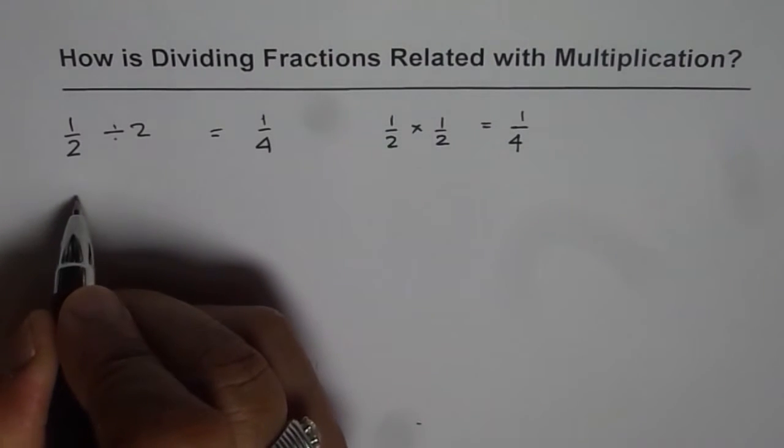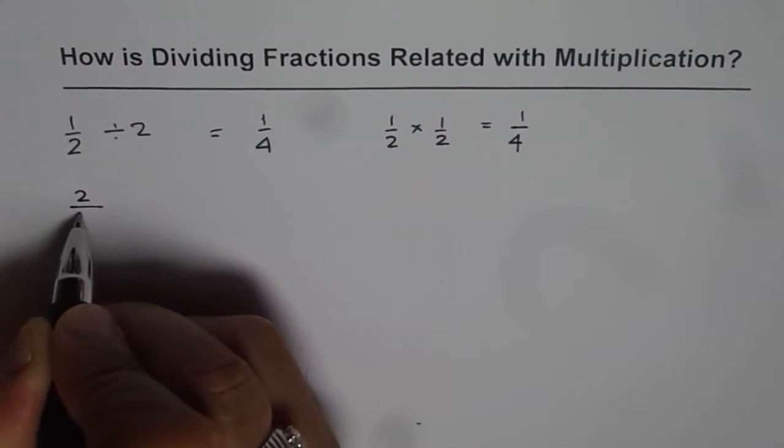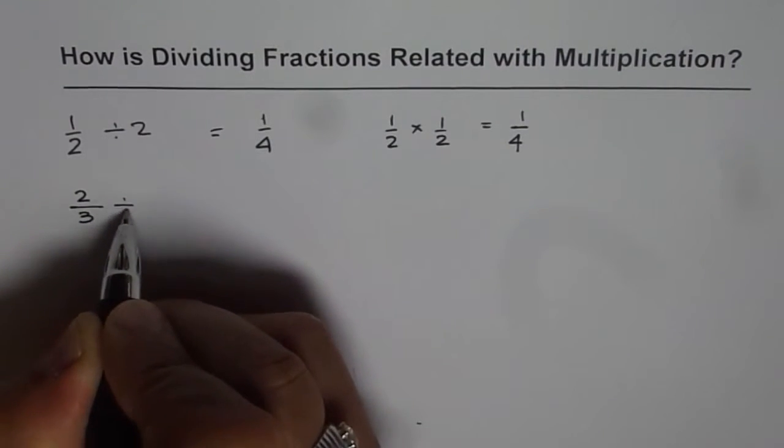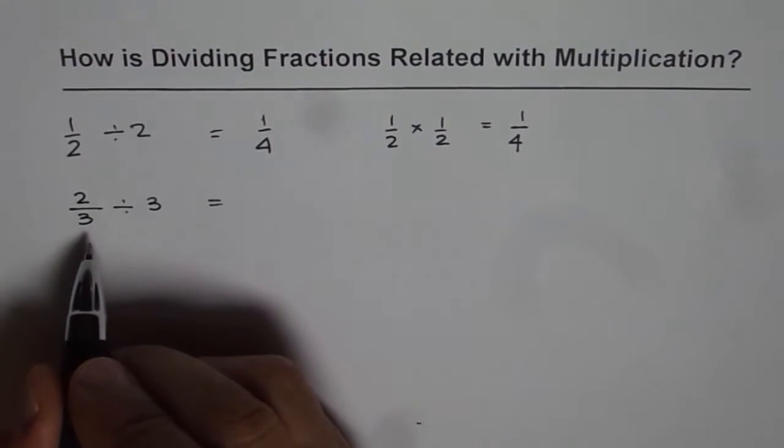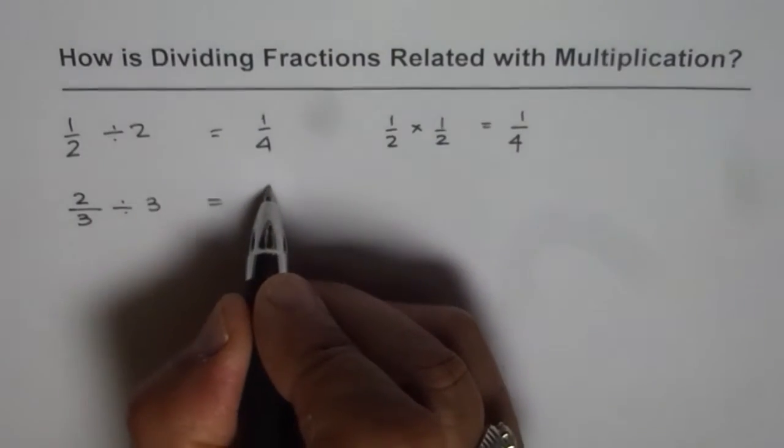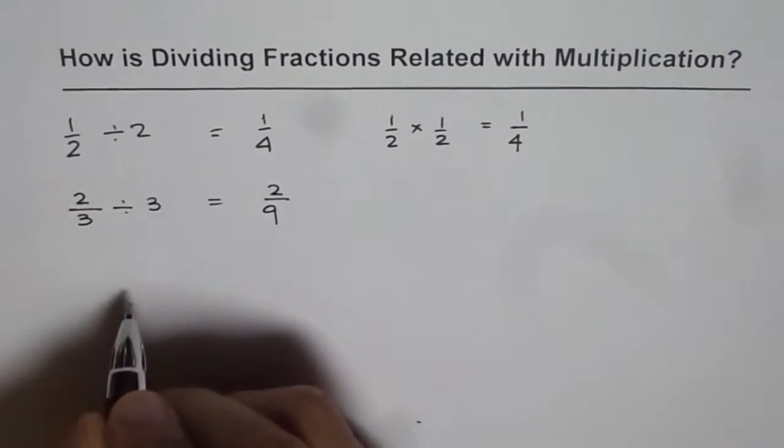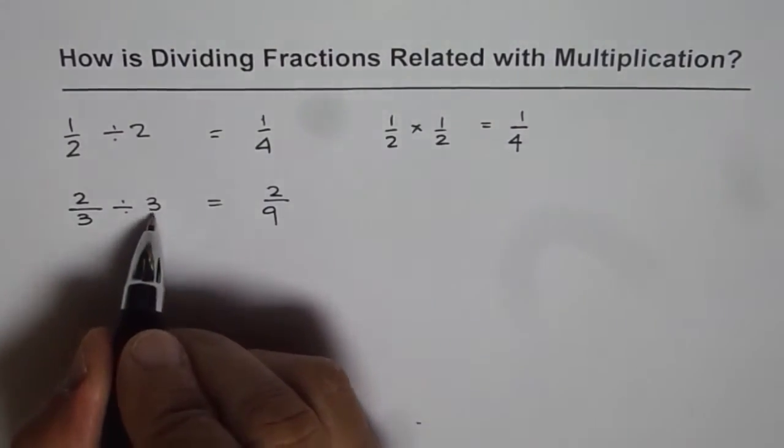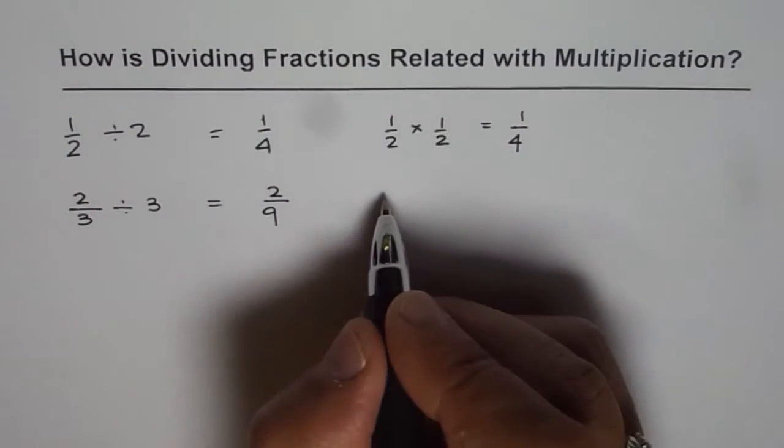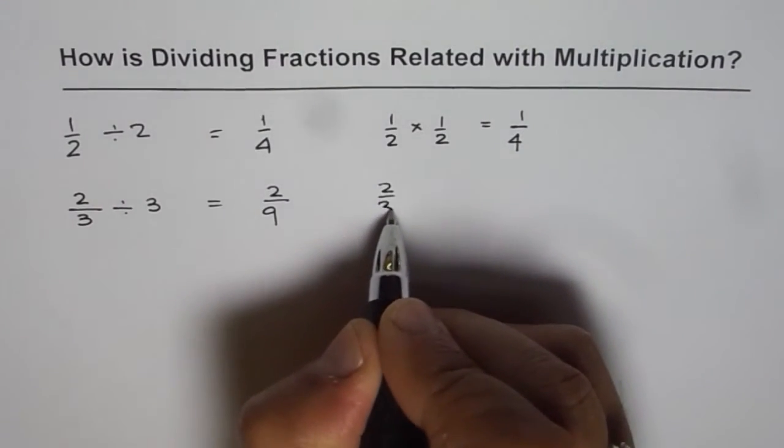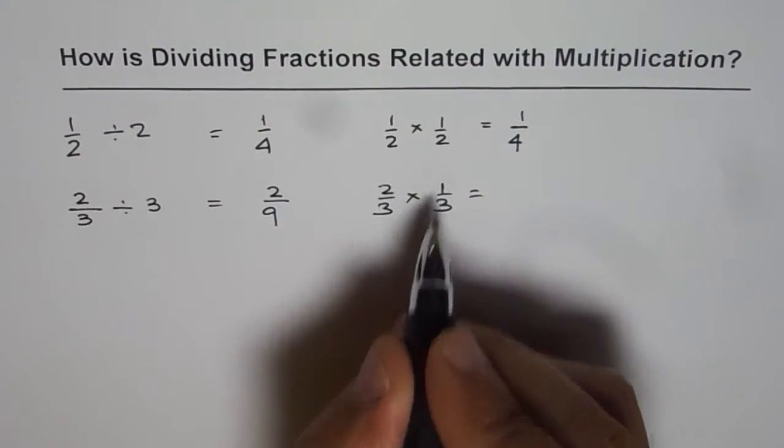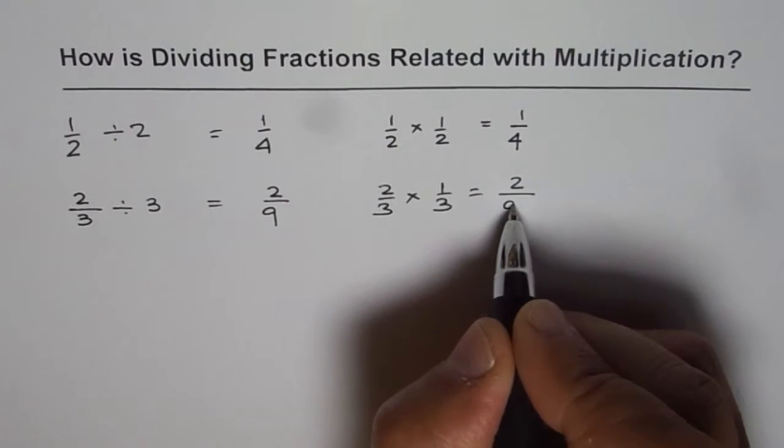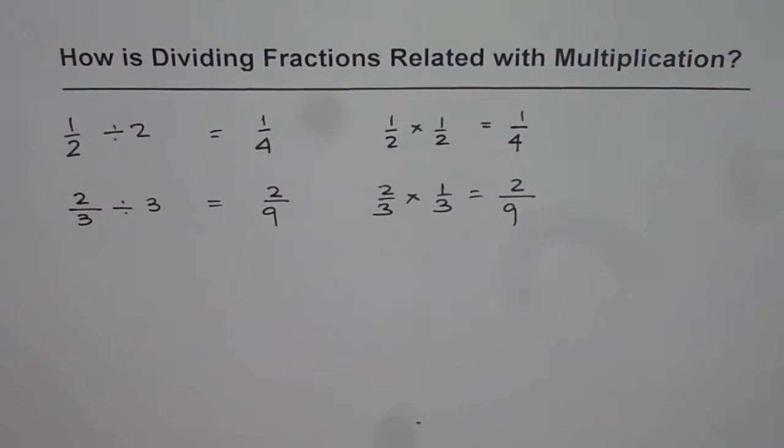Now let me try this once again. Let us say we have a fraction 2 over 3 and we have to divide this by 3. So 1 third of 2 thirds should be 2 over 9. Let me try to multiply this by reciprocal of 3. That is 2 over 3 times 1 over 3. What is that? 2 times 1 is 2 and 3 times 3 is 9. So we get the same answer.